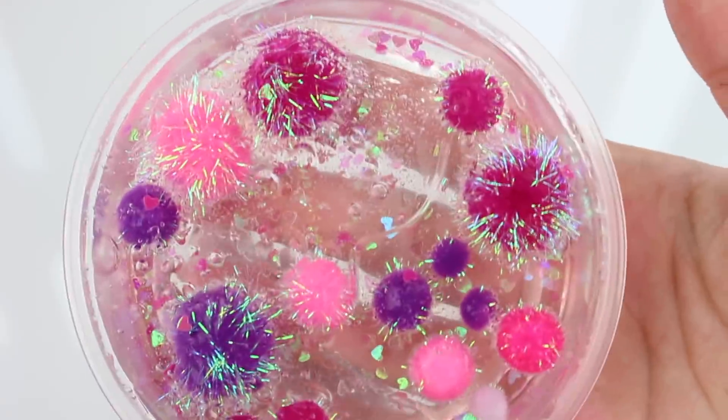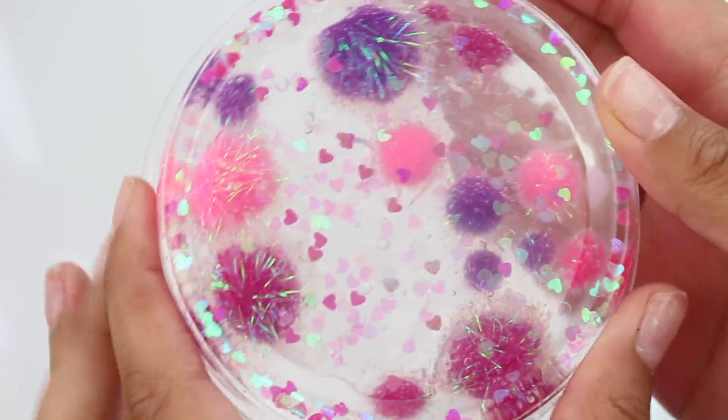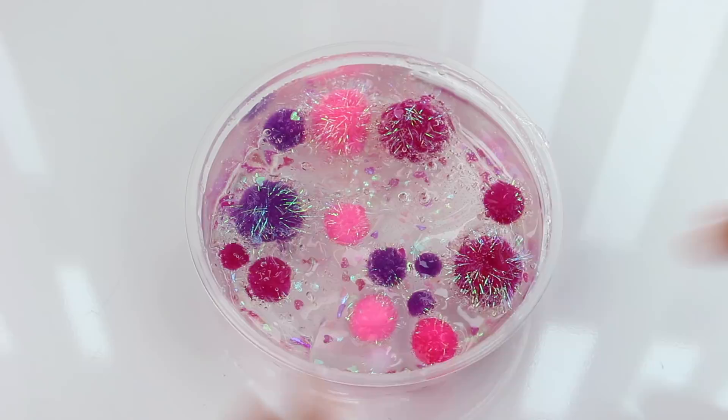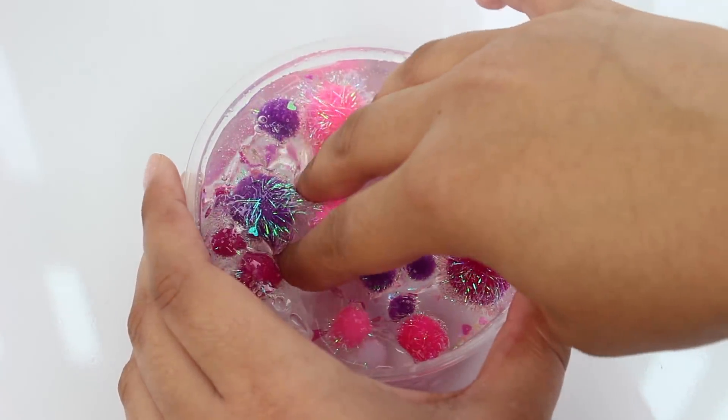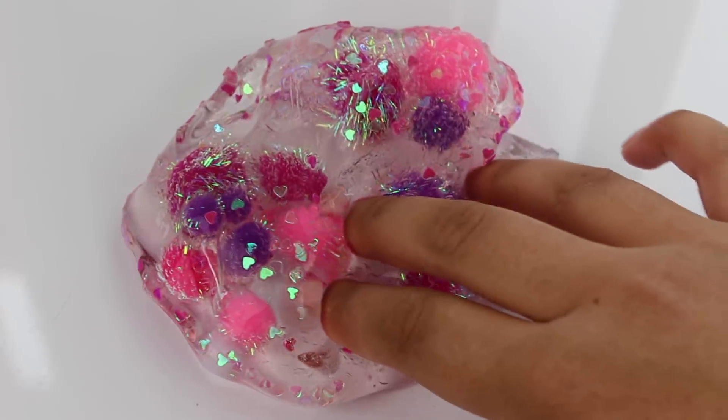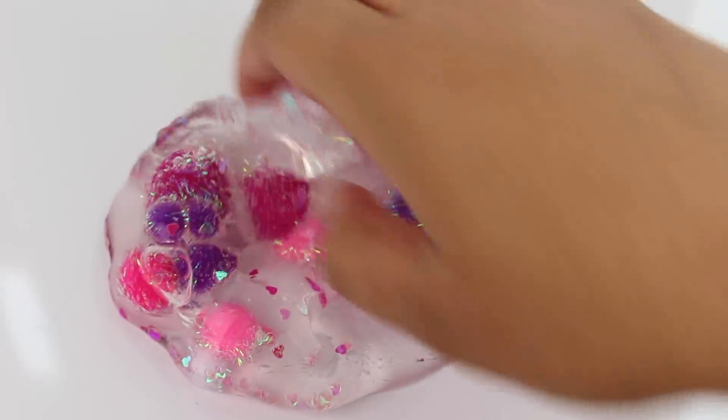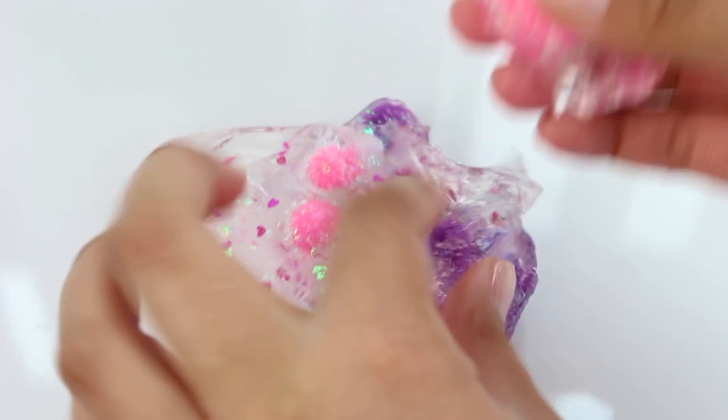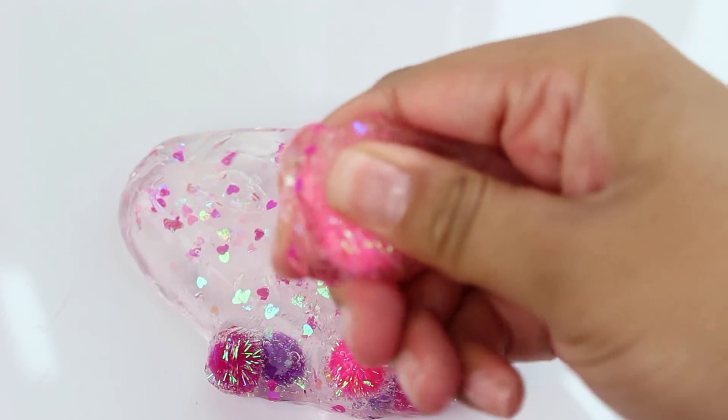Sweetie pie is a crystal clear slime with pom poms and iridescent heart glitters. Look how clear that is, I'm obsessed. This slime is based off of a pie filling. If I were to run a bakery and I had a pie called sweetie pie, this is what my filling would look like. It's so gorgeous. It's thick, it's holdable, and has a really nice squish to it from all the pom poms.